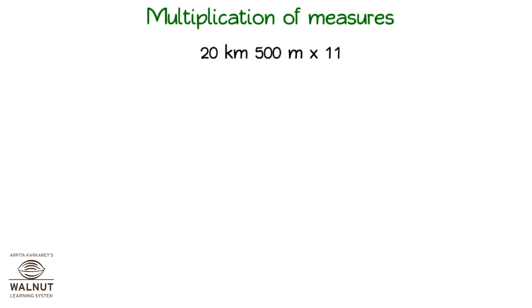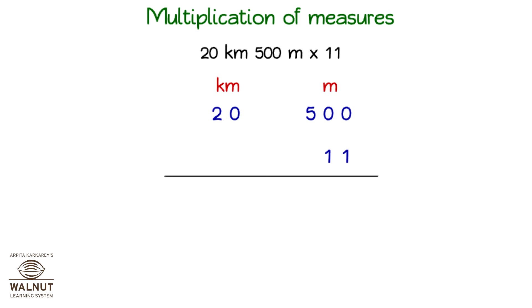Multiplication of Measures. We write the units, and below that we write the measures. Then we get ready to multiply. Look at the unit under Meters — we can see that we have to adjust it. We know that 1000 meters is equal to 1 km.